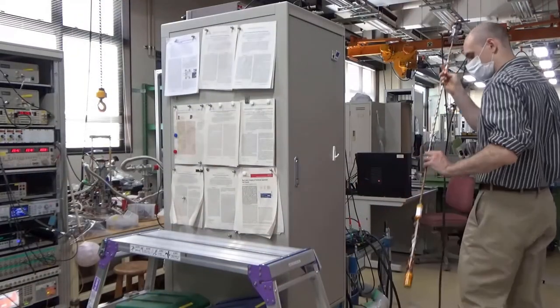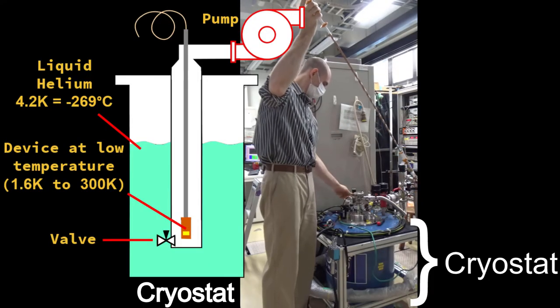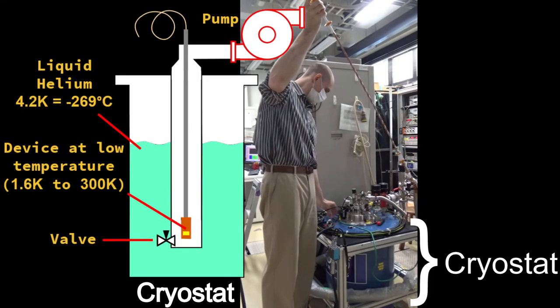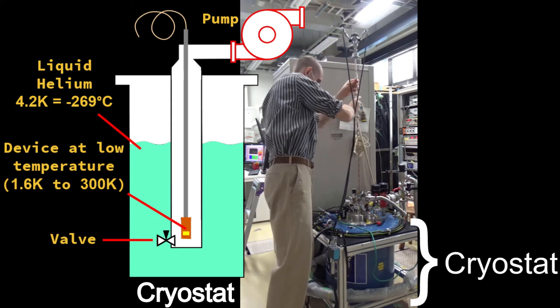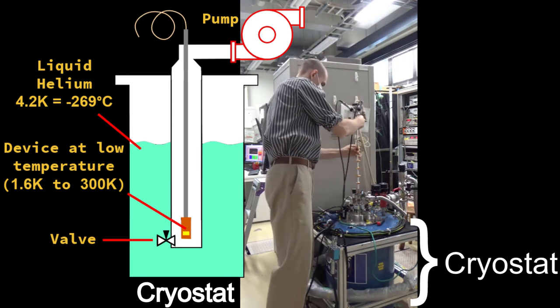We place this probe inside a cryostat containing liquid helium at a temperature of 4.2 Kelvin, or minus 269 degrees Celsius.